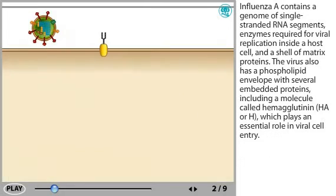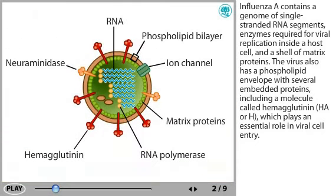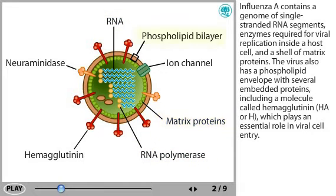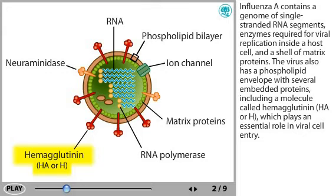Influenza A contains a genome of single-stranded RNA segments, enzymes required for viral replication inside a host cell, and a shell of matrix proteins. The virus also has a phospholipid envelope with several embedded proteins, including a molecule called hemagglutinin, abbreviated HA or H, which plays an essential role in viral cell entry.